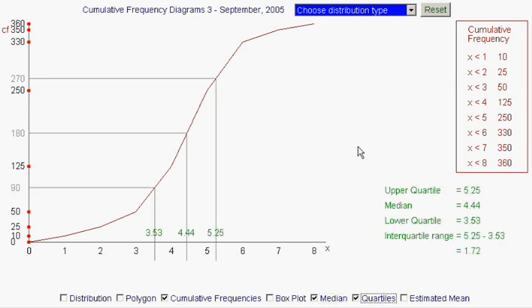Quartiles are similar, except they are the quarter and the 3 quarter values on the vertical scale. Now, out of 360, the quarter value is the 90th value. And the 90th value, read across to the curve and then down, is going to be 3.53. So the lower quartile is 3.53.